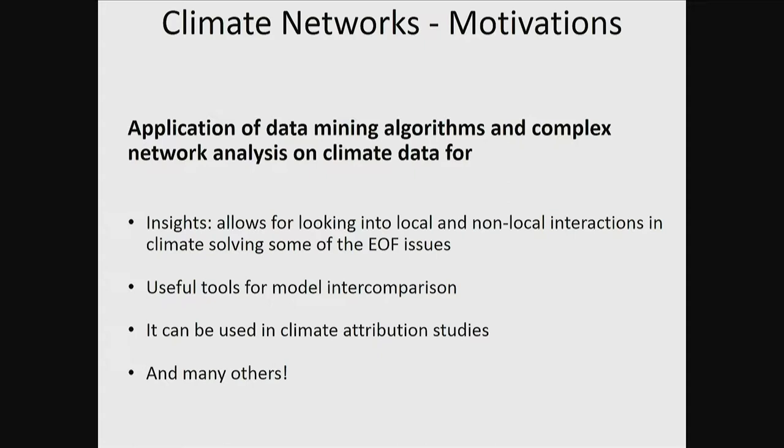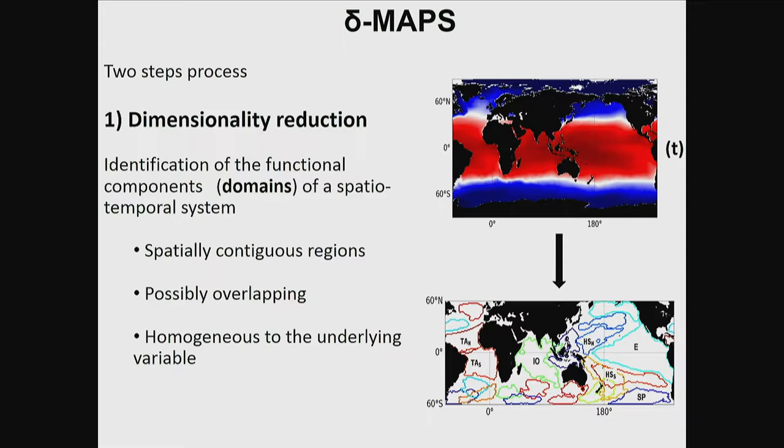We did publish a couple of papers looking at pretty much the whole suite of CMIP5 and how they simulate tropical connections all the way to 2300, which is interesting because when you pass 2100, some of the models really start to look different. The second step, which we just started, is to try to use it for attribution studies, particularly looking at where aerosols start changing teleconnection patterns.